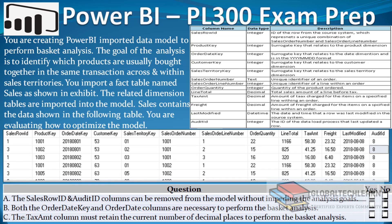You are evaluating how to optimize the model. In the exhibit on the right side, we have a list of fields from the fact table along with their description — we have product key, order key, and order date key. These fields are critical as we want to achieve market basket analysis using grouping of the products within the order. Below that we have a snapshot of the data table. The first question is: can the sales row ID and audit ID columns be removed from the model without impeding the analysis goal? We can conclude from the given data set that sales row ID and audit ID are not required to achieve market basket analysis, as we just need order ID and product key to group the products. So these two fields can be removed — the answer is yes.